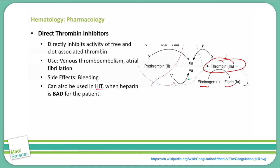It is noteworthy that direct thrombin inhibitors can be used when we have HIT, which is heparin-induced thrombocytopenia. If we cannot use heparin, we can use the direct thrombin inhibitors. This helps us remember what the direct thrombin inhibitors are: bivalirudin, argatroban, and dabigatran — using B, A, and D. Of note, dabigatran is the only oral agent in this class; the other two must be given intravenously.